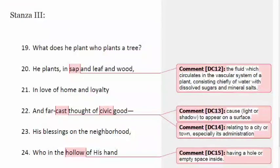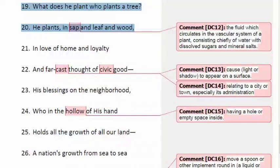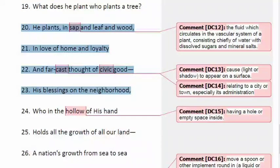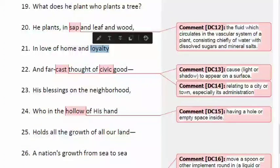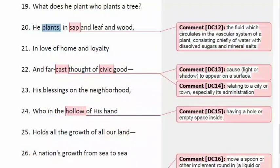Moving on to the third and final stanza. What does he plant who plants a tree? He plants in sap and leaf and wood. We also need to consider lines twenty-one, twenty-two, and twenty-three: In love of home and loyalty, and far cast thought of civic good, his blessings on the neighborhood. Here we imagine a very loyal person planting a tree with people and society in mind. He thinks one day my people will benefit just because I'm planting a tree. For the love of his hometown or country, and because he's loyal to that country, loyal to the society and hometown, the person plants a tree because this person is aware of all the benefits it can reap in the near future.